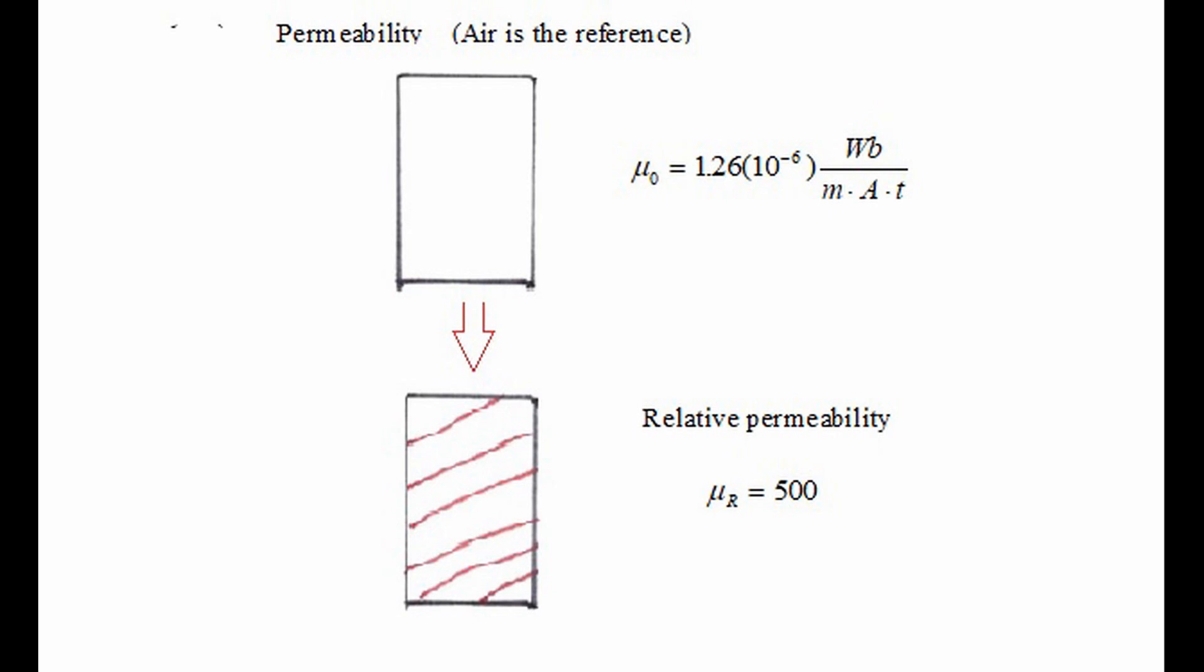Now imagine we take that same cardboard tube and insert iron. The permeability is now called the relative permeability and it equals 500. This means the permeability is now 500 times the original permeability of air, which means iron can be magnetized 500 times easier than air.